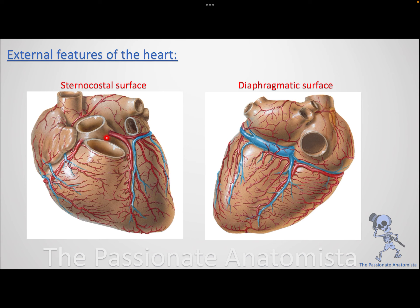There is also a groove separating the two atria from each other — the interatrial groove — visible from the posterior aspect. Anteriorly it is difficult to see, again because of the pulmonary trunk and aorta. The two ventricles are separated by the interventricular sulcus, and within that sulcus the interventricular artery runs.